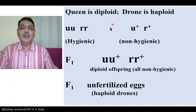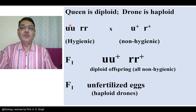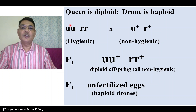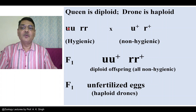Before explaining this entirely, we should know that there are two gene loci, and both gene loci are situated on separate chromosomes. So we are going to understand independent assortment of genes. There is a gene locus on which the U allele is located. U stands for uncapping the cell.